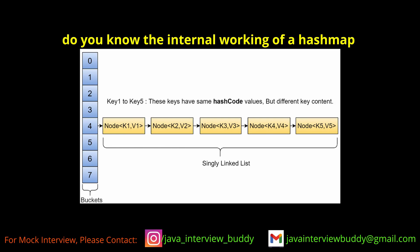Do you know the internal working of a HashMap? When we add an element using the put method, the element gets a hash code value, and that hash code value is divided by the default bucket capacity of 16. Based on the resulting index, the value is stored in the corresponding bucket number.